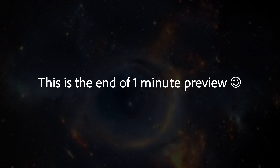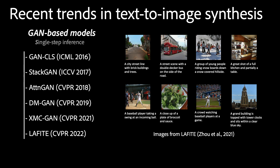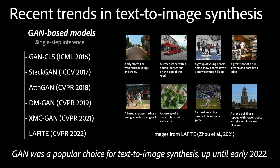From now on, I will delve into the details of our paper. Let's revisit the history of text-image synthesis models. Early models mainly used GANs, starting from GAN-CLS in 2016 and later followed by Lafite in 2022. GAN was a popular choice for text-image synthesis until early 2022.